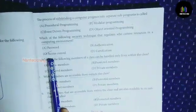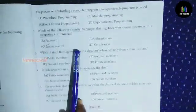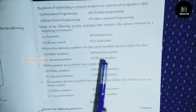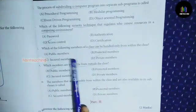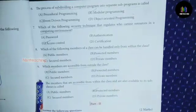Seventh one, the answer is C: Access Control. Eighth one, the answer is D: Private Members.